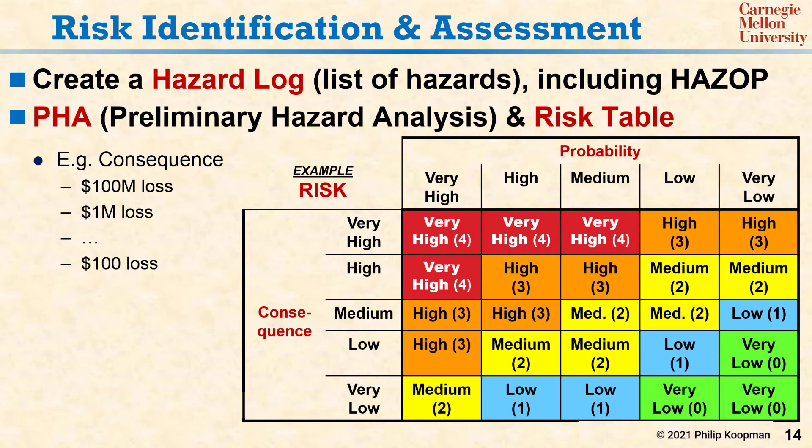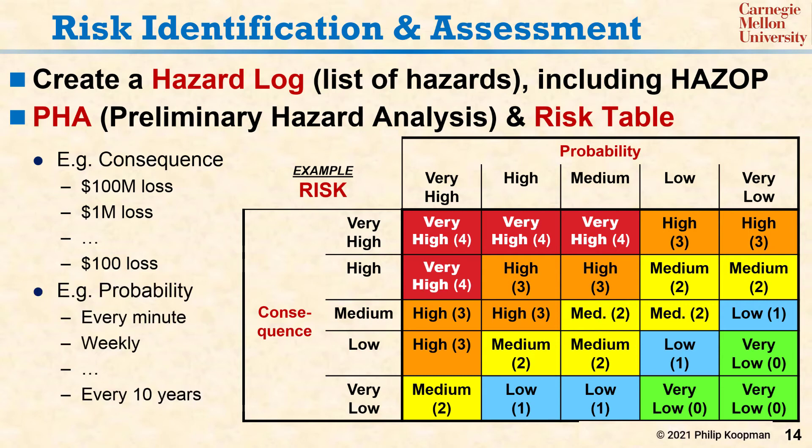The columns correspond to probability. Again, it is helpful to make the probability more concrete for your project. For example, very high might be something that happens every minute somewhere in your product fleet, and very low might be something that happens only once every 10 years across all the systems you've shipped.